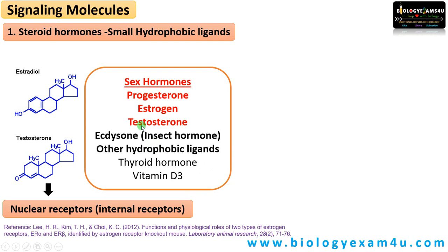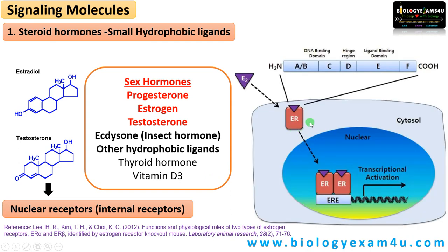Other examples include progesterone, ecdysone which is an insect hormone, thyroid hormone, and vitamin D3. The chemical nature of the ligand determines whether the receptor is on the cell surface or interior of the cell. Let's take estrogen as an example. Estrogen is a steroid hormone, therefore it can easily pass through the plasma membrane which is made up of phospholipid bilayer. So it has a receptor on the nucleus. This receptor binds to estrogen then moves to the nucleus often as a dimer, then binds to a specific DNA region called the estrogen response element, activating expression of many genes that often lead to cell division and cell growth.